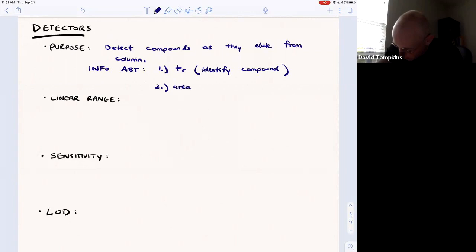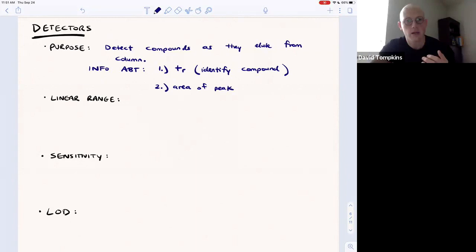Assuming that we are operating within something called a linear range, then the area of the peak on the detector's plot that is produced through the chromatogram should be proportional to the concentration of the compound. Peak area allows us to determine concentration of that compound after we found its identity using retention time. These are the two big pieces of information that come from a detector.